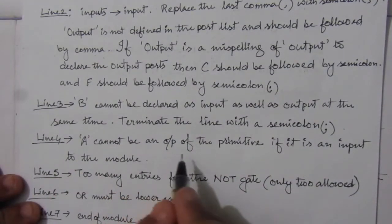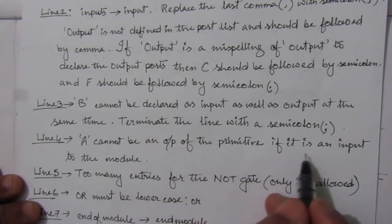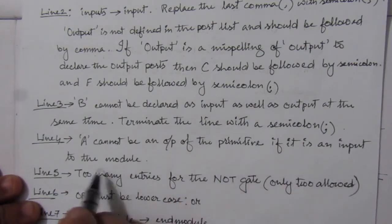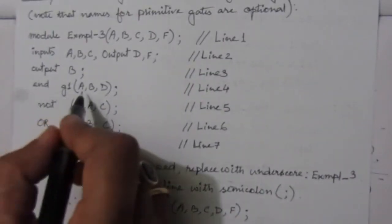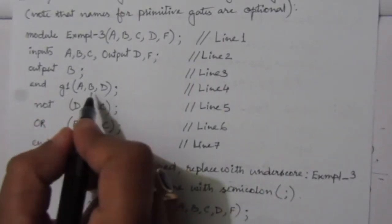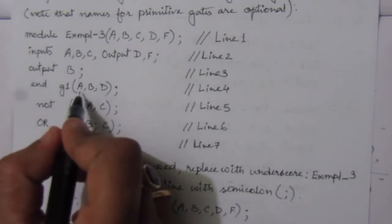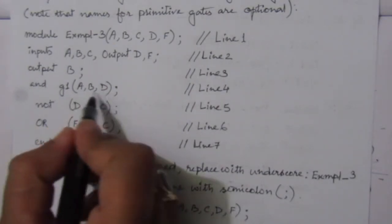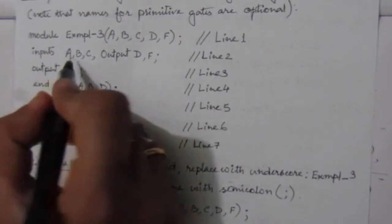In the fourth line, A cannot be an output of the primitive if it is already an input of the module. Here we are doing an AND operation between B and D and storing the value in A, but A is becoming an output of this operation while it has been declared as an input — this is not possible.